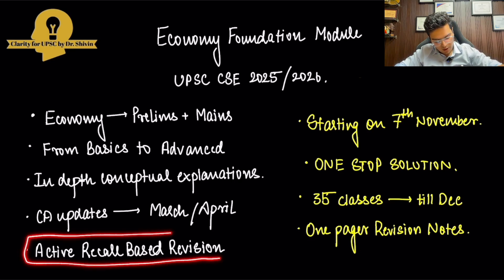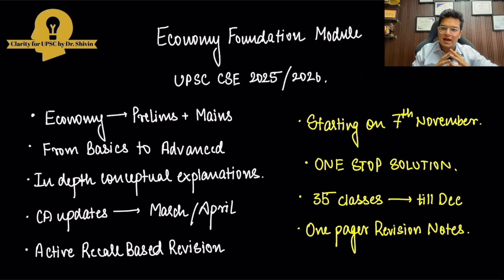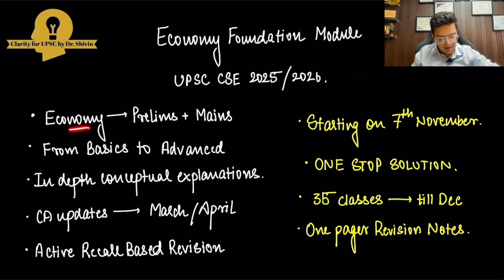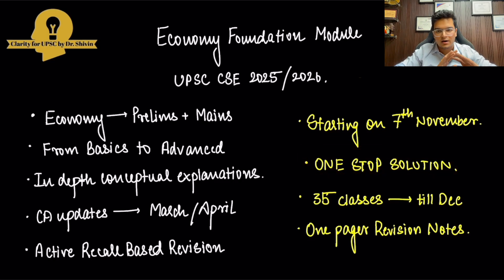I will also be ensuring that we do active recall-based revision, so that everything is remembered in class itself — we don't have to go to lengths to revise again and again. It will be my initiative to ensure that what you study with me, you understand here and revise here so you can remember it always. So prelims and mains together, starting in November, from the very basics and scratch, in all the depth required for UPSC, for both economy and agriculture — starting 7th November. This will be a one-stop solution for economy and agriculture. It will take about 35 classes, starting in November and finishing by 1st or maybe 10th December.